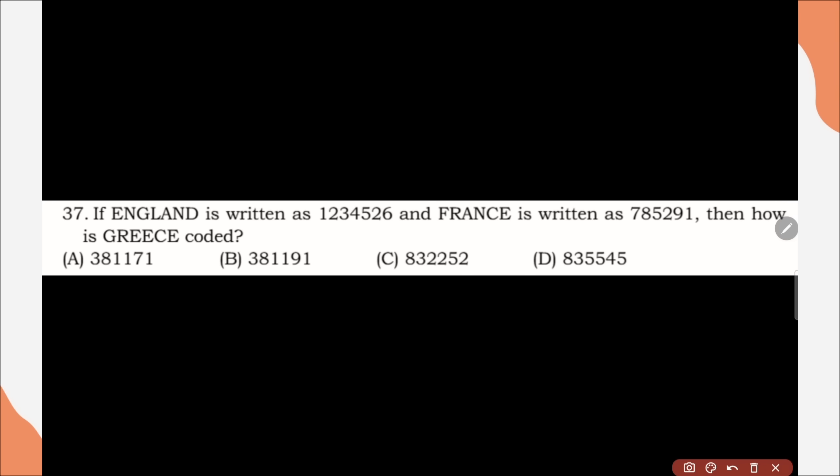Question number 37, if England is written as 1234526 and France is written as 785291, then how is Greece coded? Correct option is option B, 38119 1.